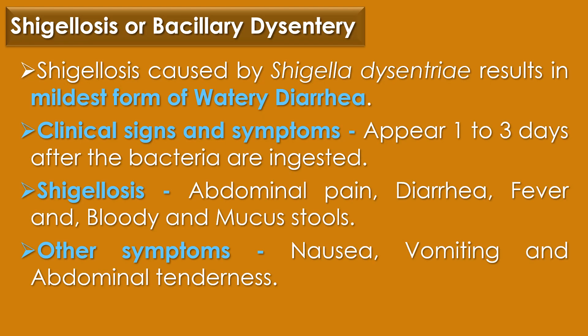The first clinical disease caused by Shigella species is Shigellosis or Bacillary dysentery. Shigellosis caused by Shigella dysenteriae is very severe, while other Shigella species result in a milder form of watery diarrhea. Clinical signs and symptoms appear 1 to 3 days after the bacteria are ingested. Shigellosis is characterized by abdominal pain, diarrhea, fever, and bloody and mucus stools. Other symptoms include nausea, vomiting, and abdominal tenderness, which is a sign of inflammation in one or more organs.